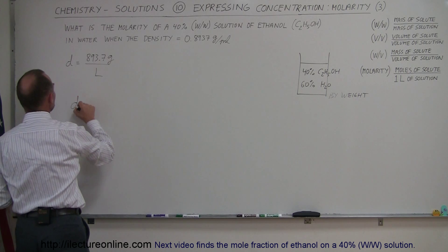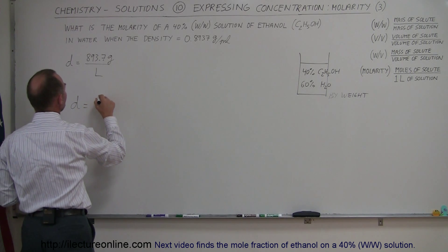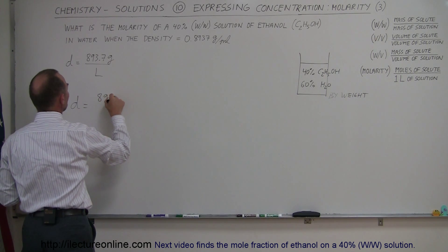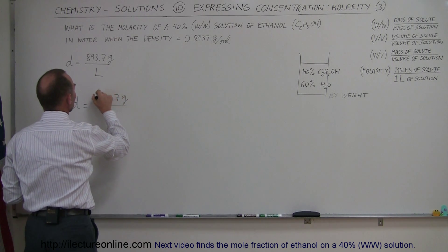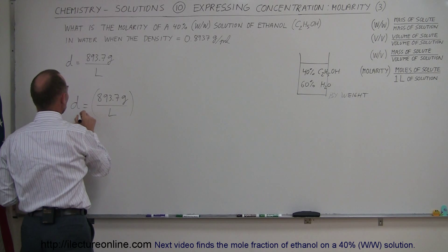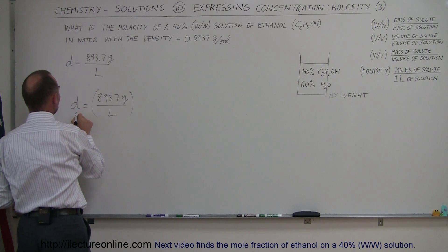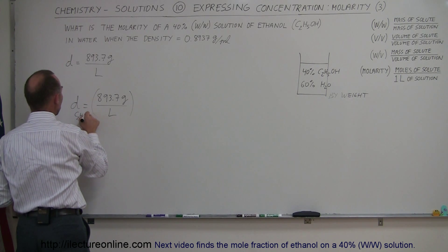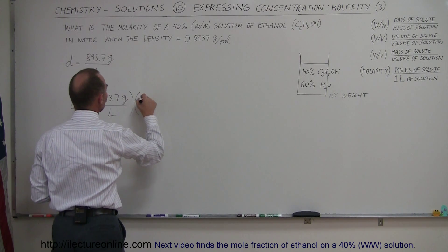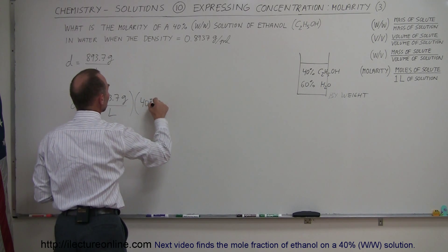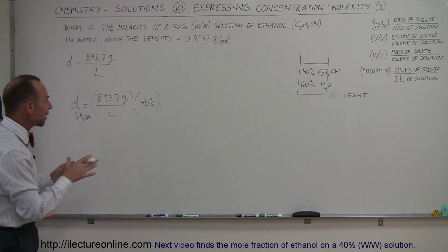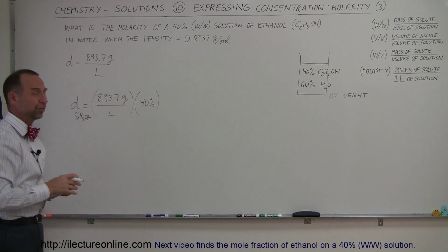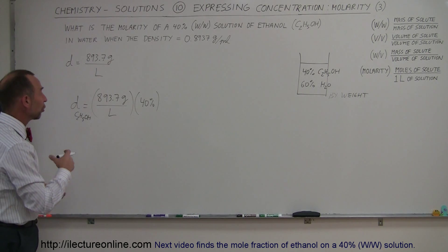So we can write that the density is equal to 893.7 grams per liter. That would be for the solution, but the density of the ethanol, the C2H5OH, we're going to have to multiply this by 40%. So now we have the density of the ethanol per liter, the number of grams per liter of ethanol versus the number of grams per liter of the total solution.